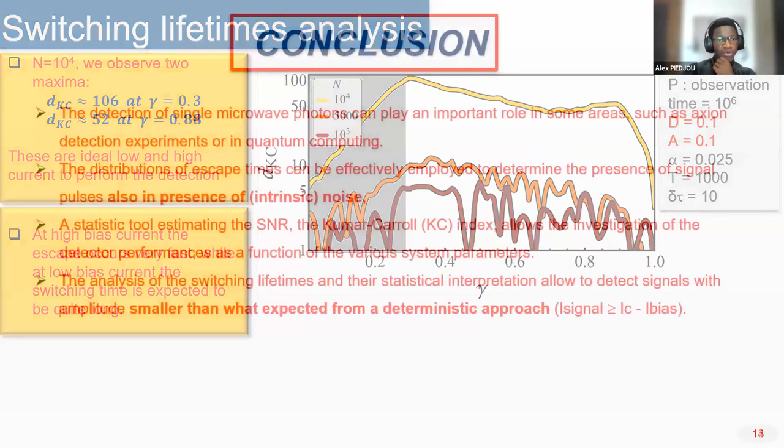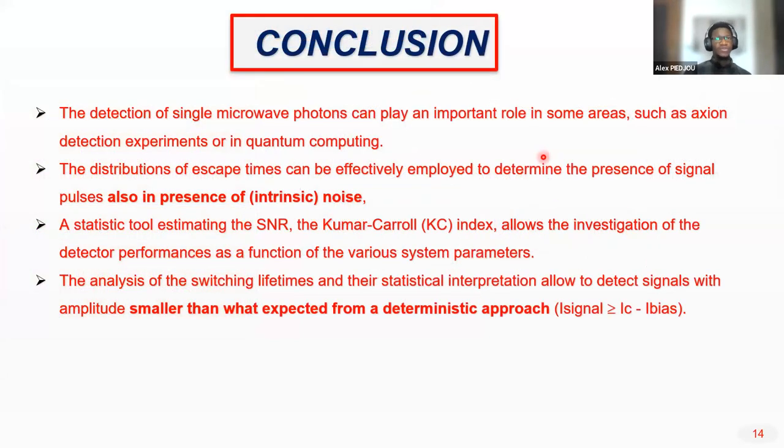To end up with this work, we show that the detection of this microwave photon plays an important role in some areas such as axion detection or quantum computing. We also show that by using the Kumar-Carroll index, that is an estimate of the signal to noise ratio, we investigate the performance of our detection by varying the parameters of the system. The analysis of the switching times and the statistical interpretation allow us to detect a signal with smaller amplitude than what expected from a deterministic approach.